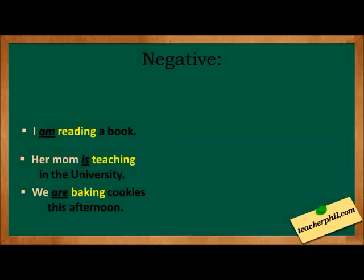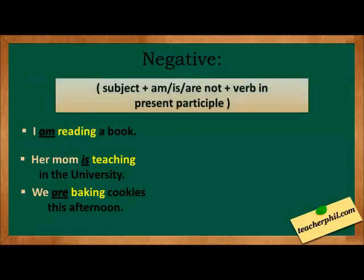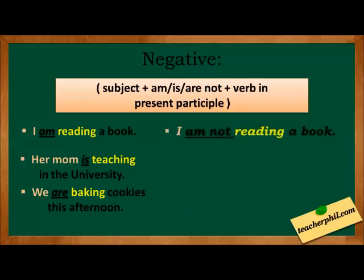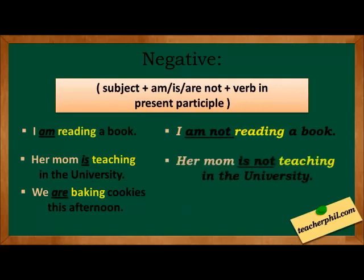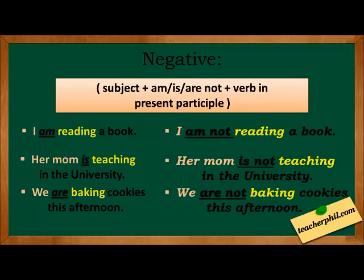For the negative sentence, the pattern is: subject plus am, is, or are not, plus verb in present participle. Examples: I am reading a book → I am not reading a book. Her mom is teaching in the university → Her mom is not teaching in the university. We are baking cookies this afternoon → We are not baking cookies this afternoon.